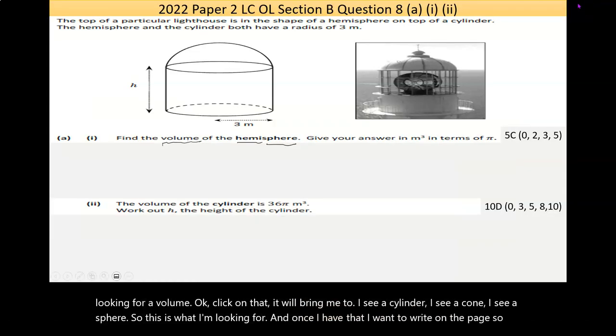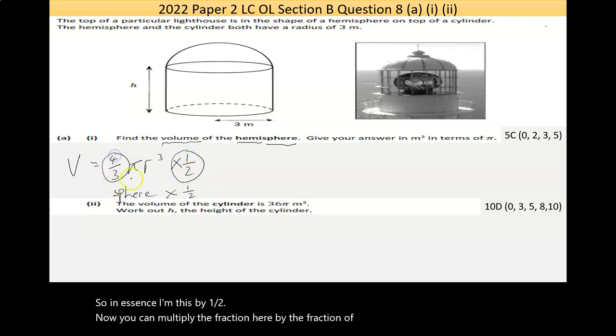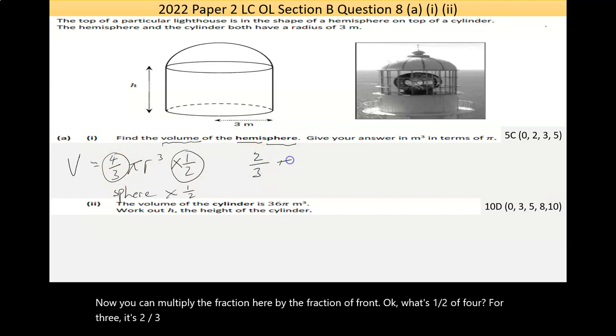Let's see, now can I get this pen working? Volume is equal to 4 over 3 pi r cubed. Now, that's for a full sphere. So we want a hemisphere, which is a half of a sphere. So, in essence, I'm multiplying this by a half. Now, you can multiply the fraction here by the fraction in front. What's a half of 4 over 3? It's 2 over 3. Now, you can use the calculator whatever way you want. So that's my formula.